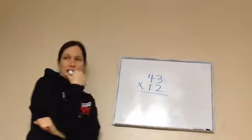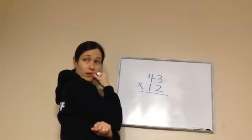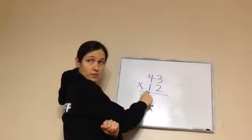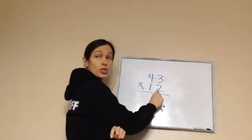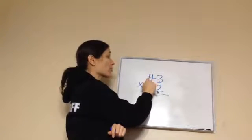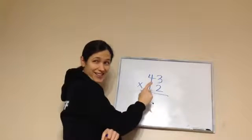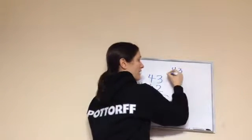Well, what does that one indicate? What place is it in? Tens. So how much is this worth? Ten. So I'm multiplying 43 times two, and then I'm multiplying 43 times 10. You get that? Sort of? So that's just an understanding of it.